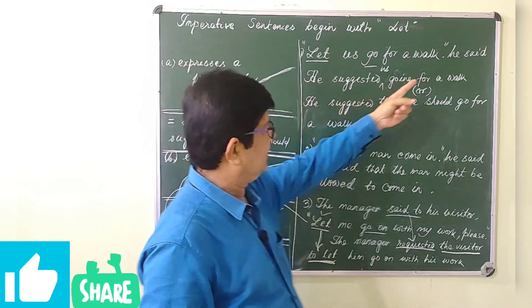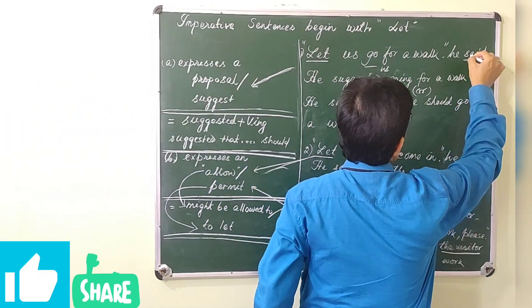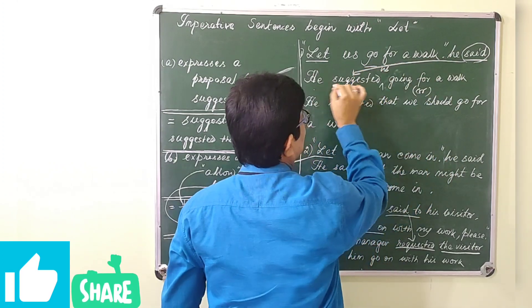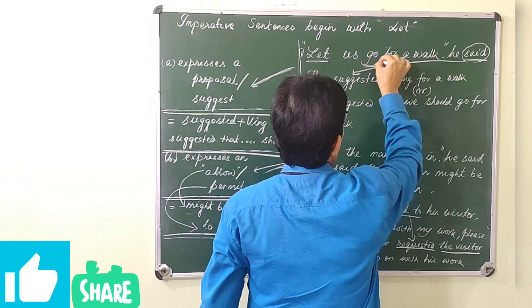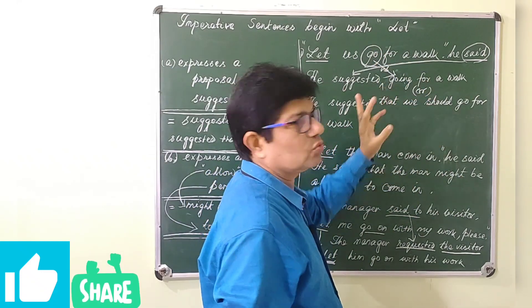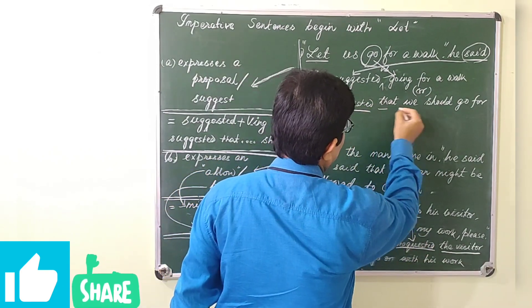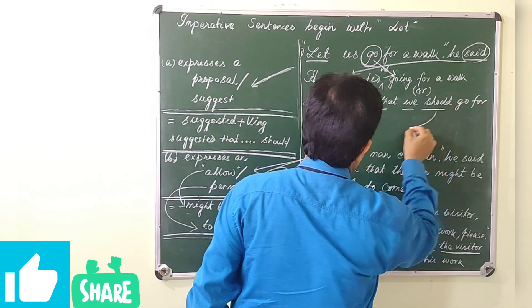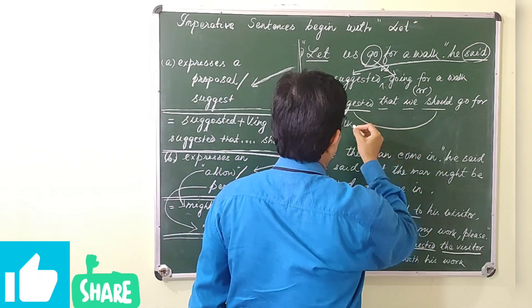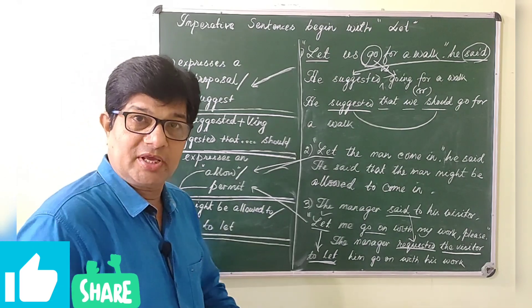He said - said here has been converted to suggested. He suggested. So, go is the infinitive verb. It becomes going. He suggested going for a walk. This is one way. The other way is: he suggested that we should go for a walk. This is always preferred.